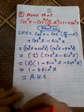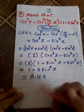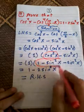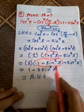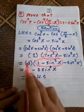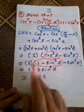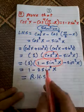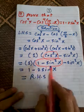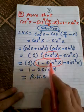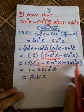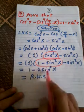Since cosine squared x equals one minus sine squared x, substitute to get one minus sine squared x minus sine squared x. Collecting like terms gives one minus two sine squared x, which equals the right hand side.